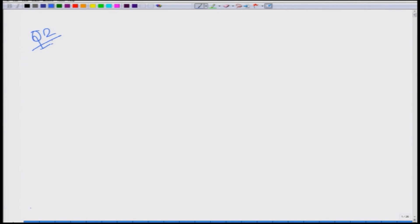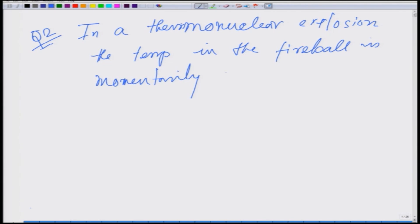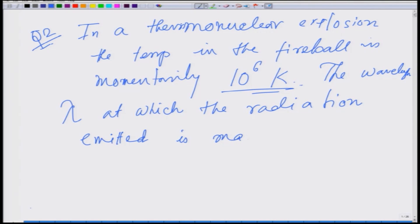In question number 2 we have in a thermonuclear explosion the temperature in the fireball is momentarily given as 10 to the power 6 Kelvin. It asks for the wavelength lambda at which the radiation emitted is maximum and we need to find out this wavelength in Angstrom where 1 meter is 10 to the power 10 Angstrom.